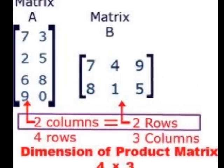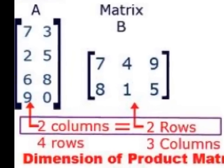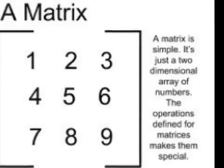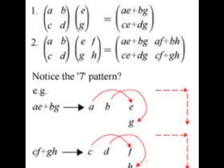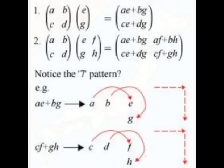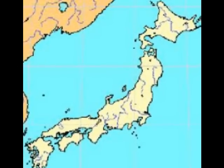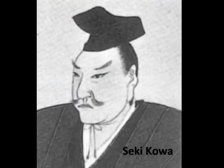gives the first known example of the use of matrix methods to solve simultaneous equations. In the treatise's seventh chapter, 'Too Much and Not Enough,'